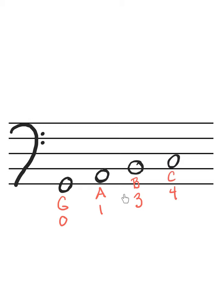So our same finger trick still works here. Our line notes, G and B, are either zero or three and our space notes are either one or four.